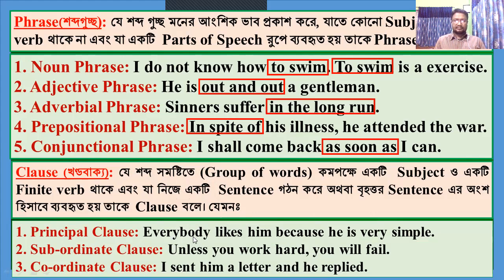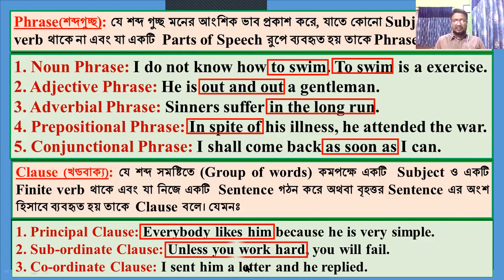Principal clause: 'Everybody likes him.' Here there is subject, verb, and object, and there is nothing before the subject. So it is a principal clause. Subordinate clause: 'Unless you work hard, you will fail.' Here, 'unless you work hard' is a subordinate clause, because it has subject 'you', verb 'work', and before the subject there is 'unless'.